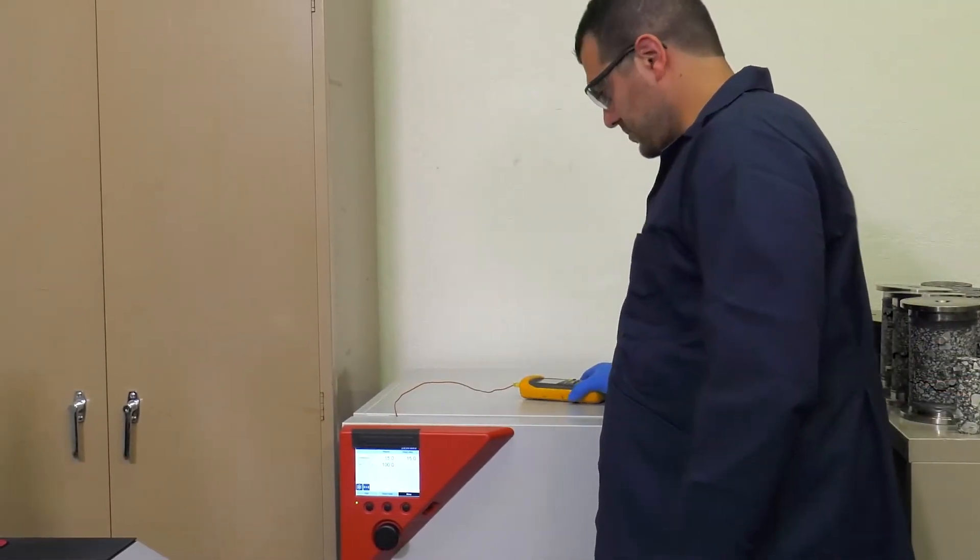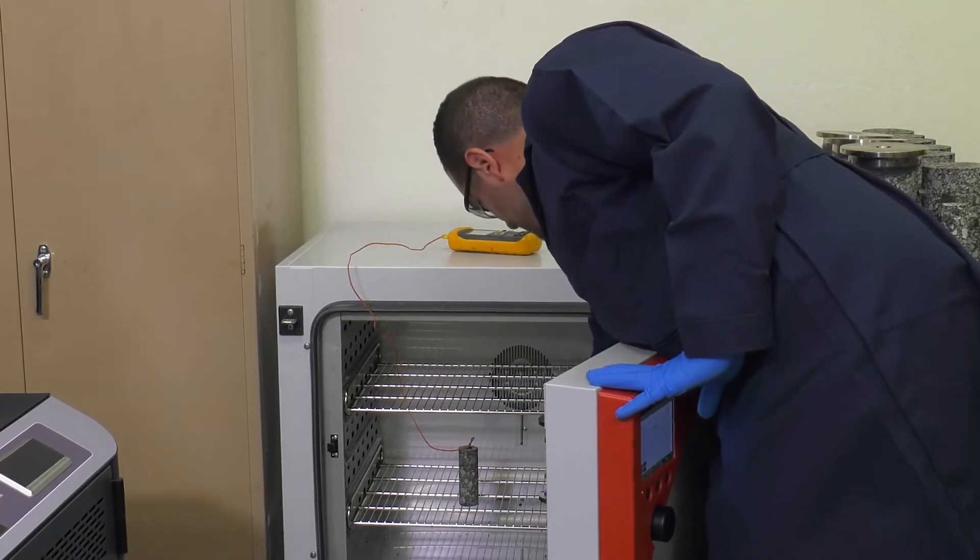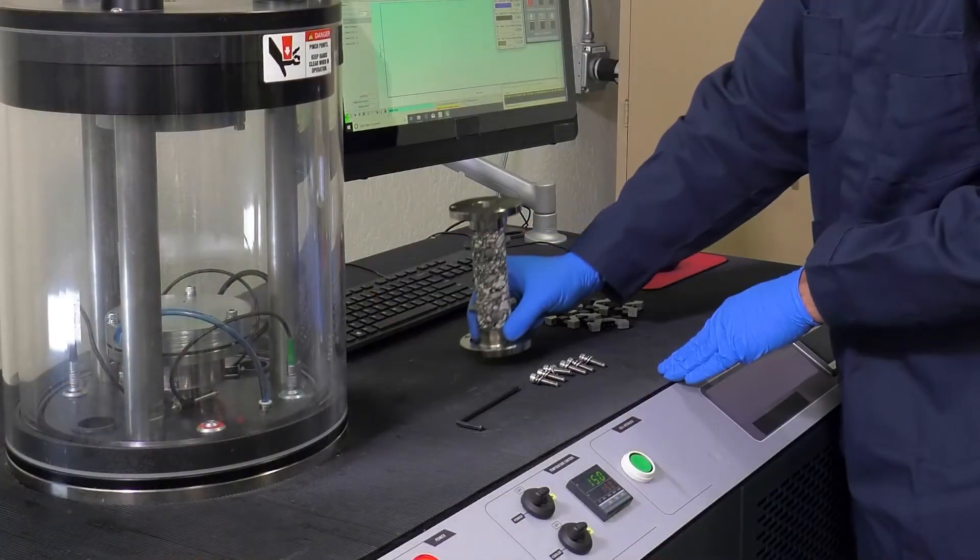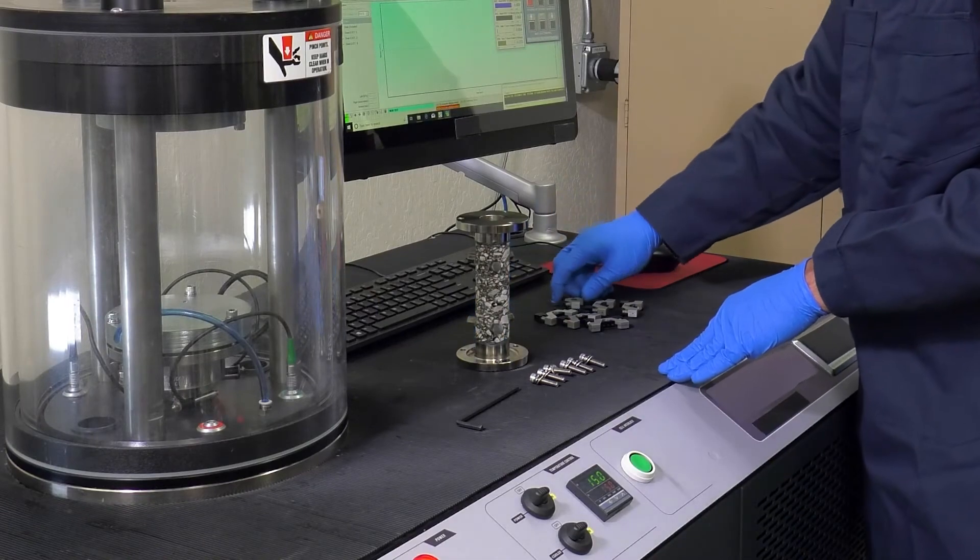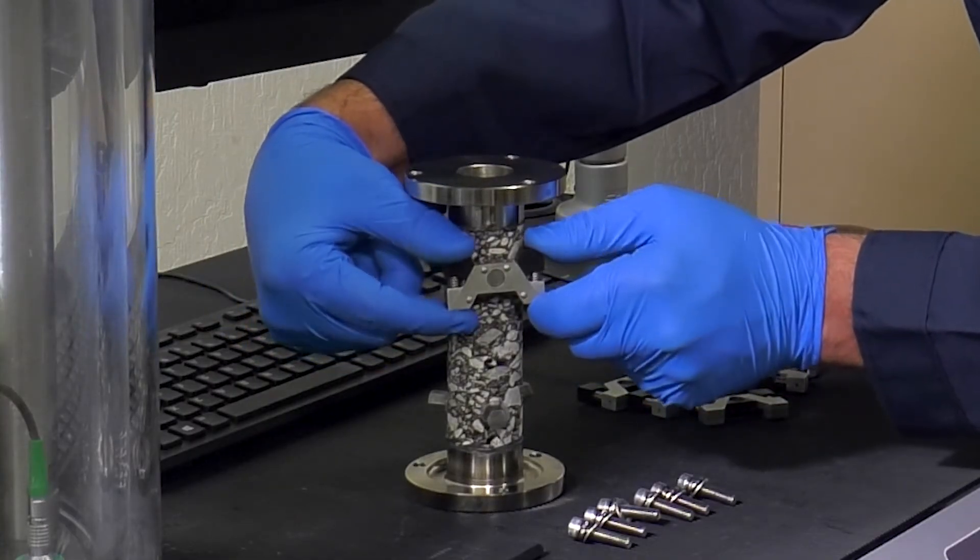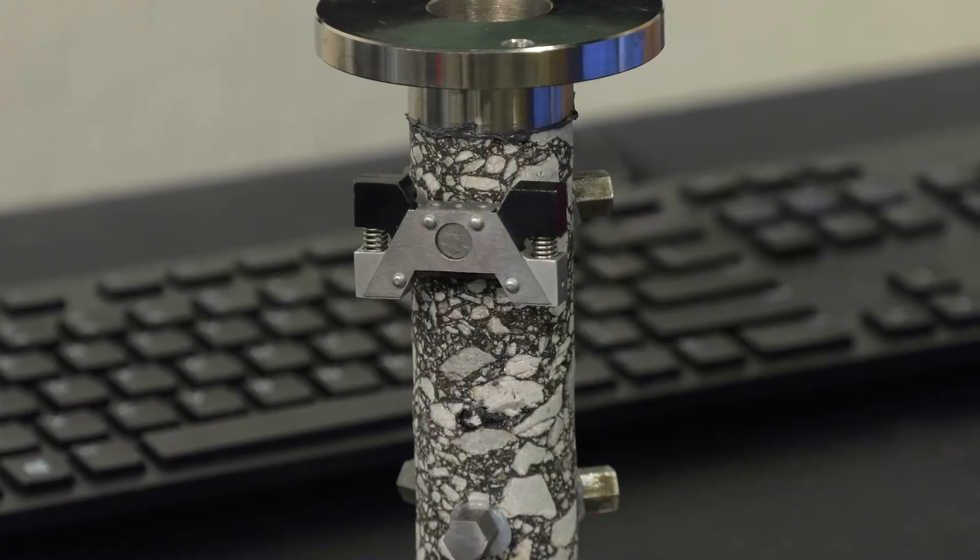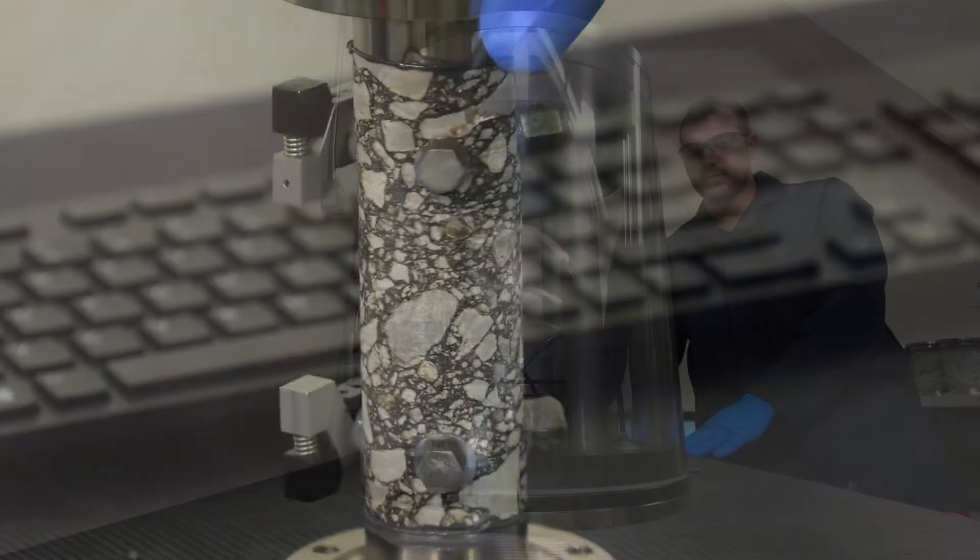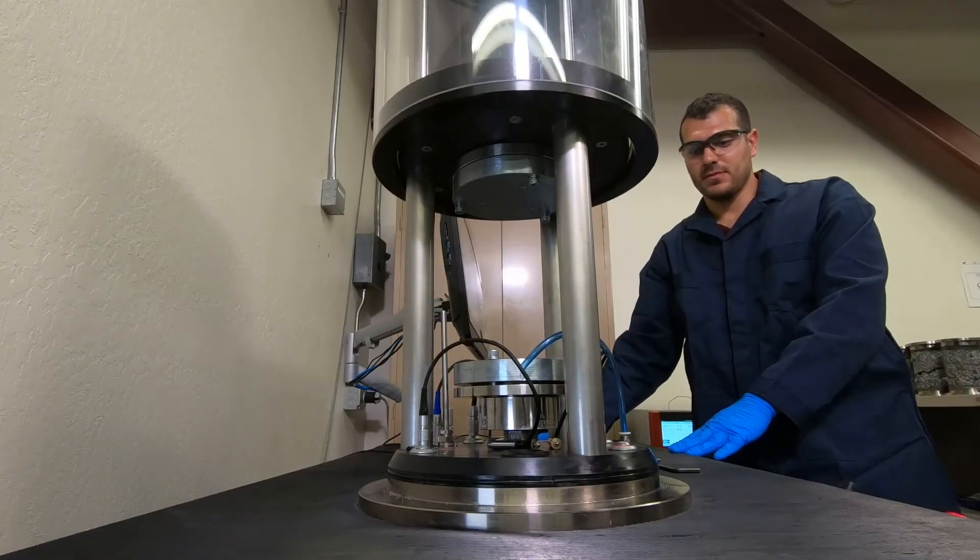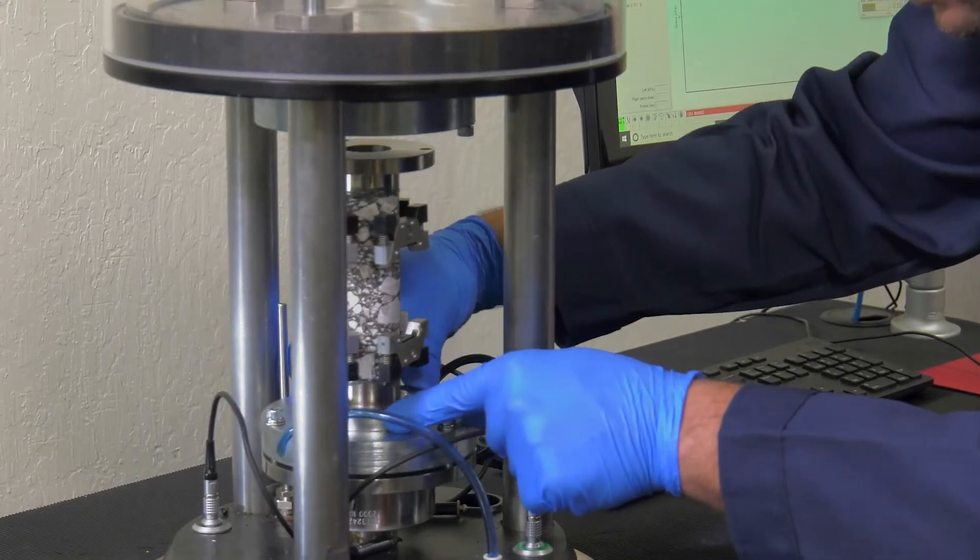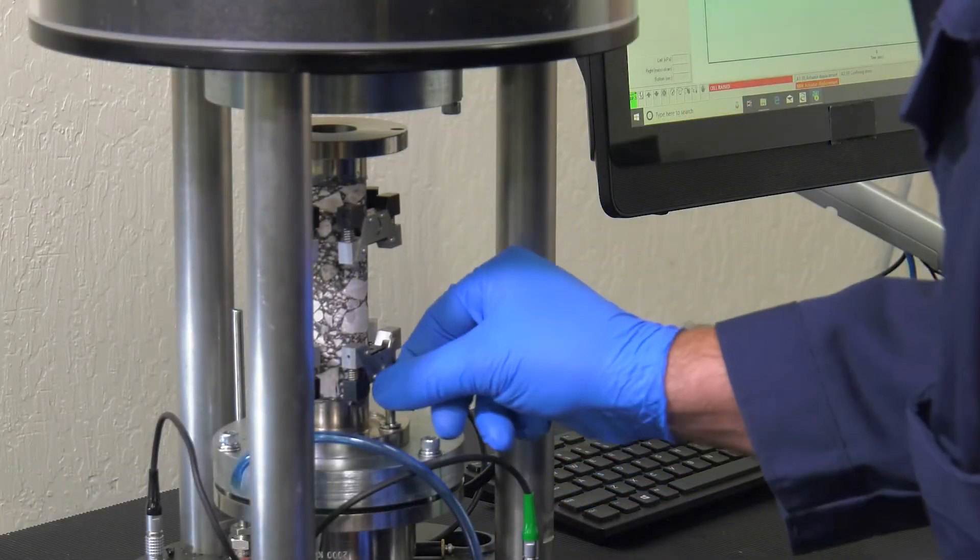Once the dummy specimen and the AMPT have reached the designated testing temperature, remove the testing specimen from the external environmental chamber and attach the LVDT clamps. Make a note of the time before opening the external environmental chamber to calculate the specimen installation time. Open the AMPT conditioning chamber and set the specimen on the lower platen and secure with screws and washers. Tighten all screws evenly.